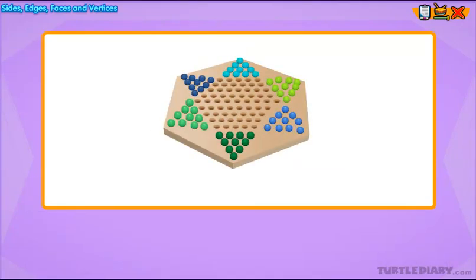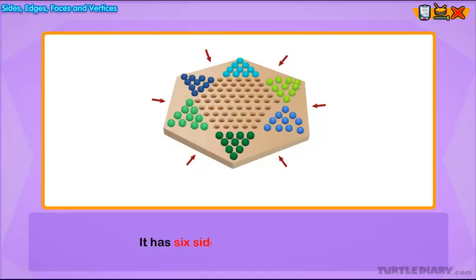You are playing Chinese checkers with your friends. You look at the board and see that it has six sides. You know it is a hexagon.